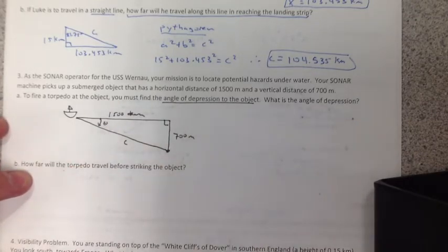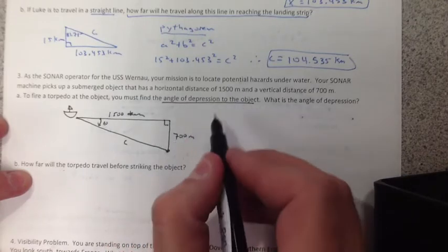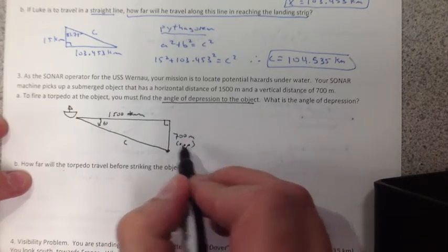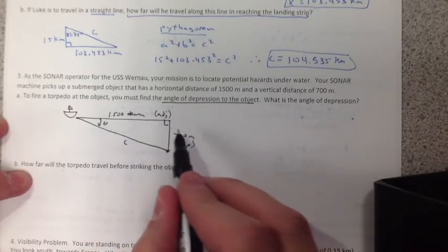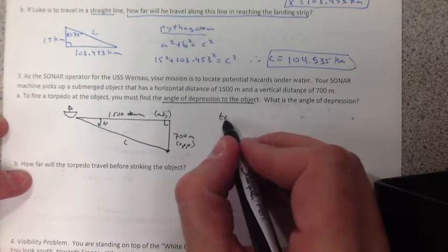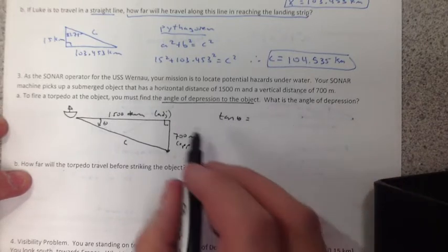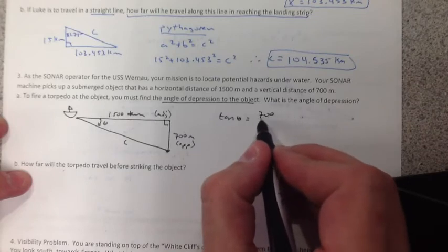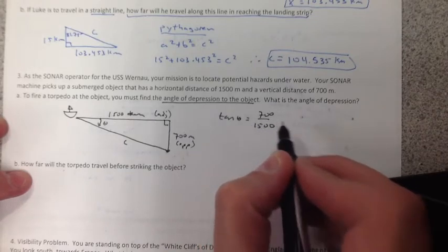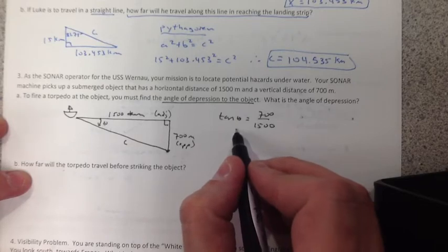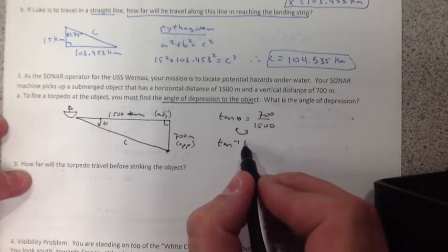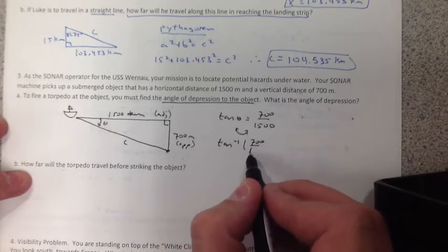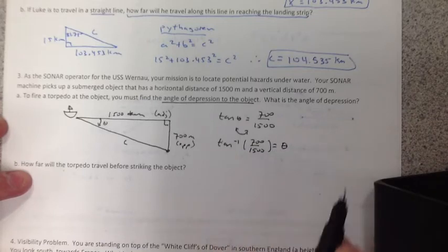Now, we are given the opposite and the adjacent. What we need to do is find this angle. So given opposite and adjacent, we're going to use the tangent of theta. The tangent of theta being the opposite, 700 over 1,500. Now, remember, to solve for the angle, we have to use inverse trig. So we're going to get the inverse tangent of 700 over 1,500. And that's going to give us our theta.